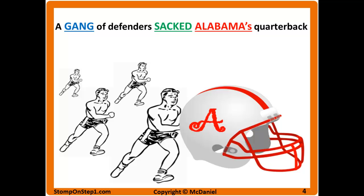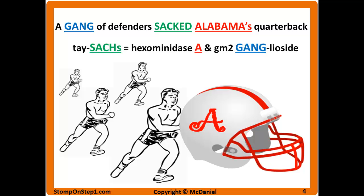Think of a gang of defenders sacking Alabama's quarterback. This picture requires a little bit of imagination because I am limited by certain copyrights — those of you who are college football fans will know that's not really Alabama's helmet, but it's close enough, and those aren't actually football players. So a gang of defenders sacking Alabama's quarterback will let you know that Tay-Sachs is the deficiency of hexosaminidase A and GM2 ganglioside builds up.